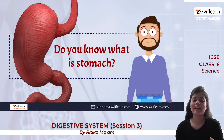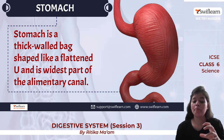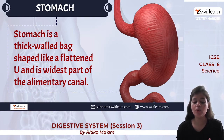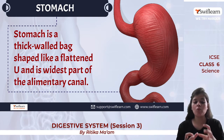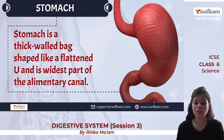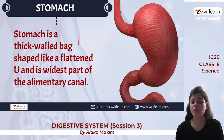The stomach is a thick-walled, bag-shaped structure. Its shape is like a flattened U, and it forms the widest part of the alimentary canal.